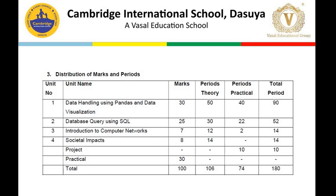This slide gives you the broader picture of what components are there in our syllabus and what is their weightage. So finally, in the practical part, we have to focus on a project. It's very important that we cover all these topics in a very professional way so that at the end we can prepare a project of around about 500 lines of code.